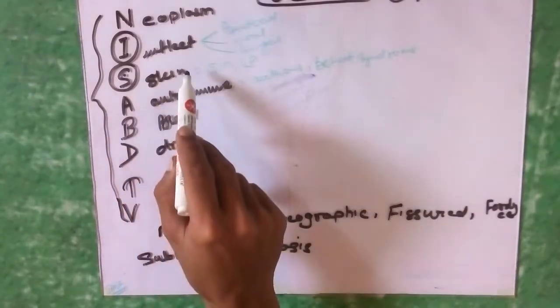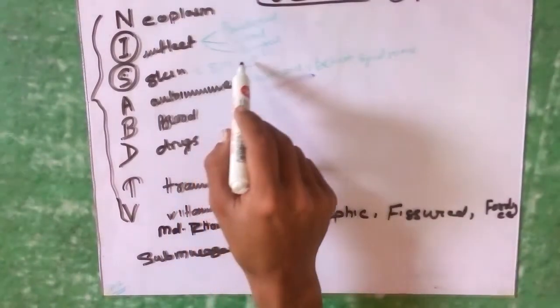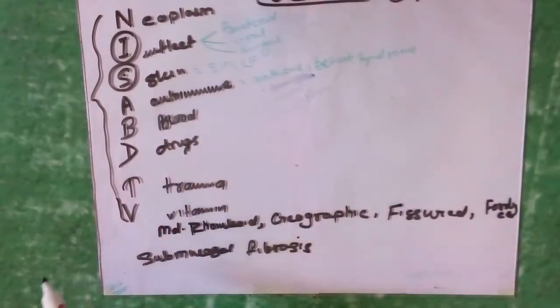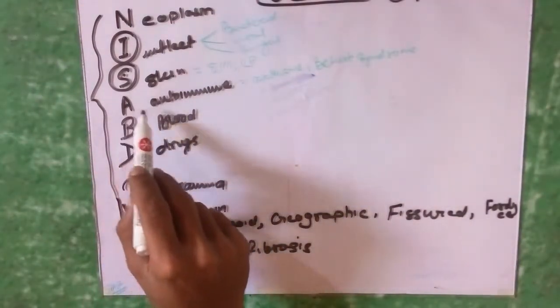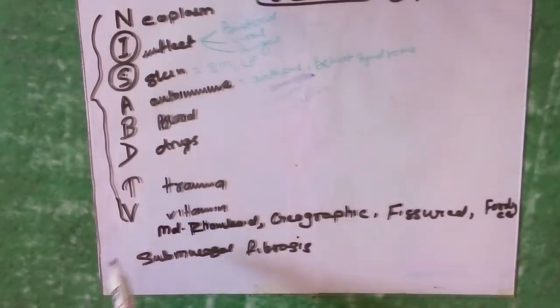NISABDTV means N for neoplasm, I for infection, S for skin disease such as erythema multiforme and lupus, A for autoimmune disease, B for blood dyscrasias, and D for drugs.